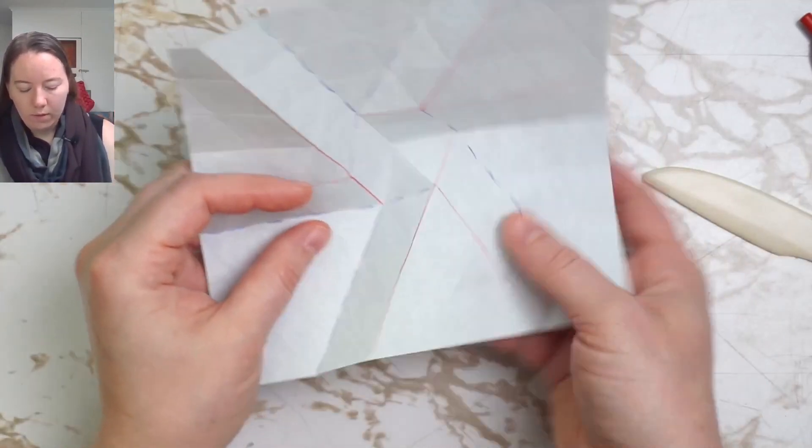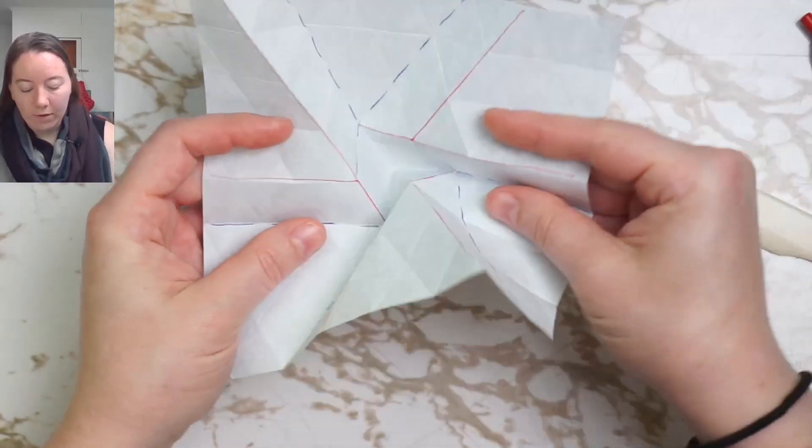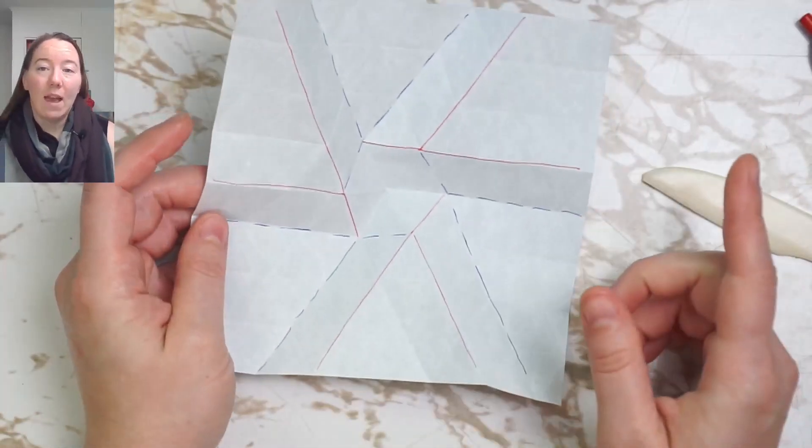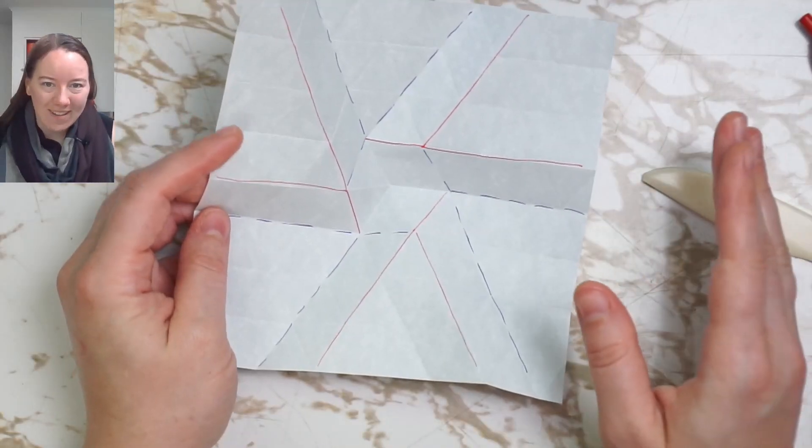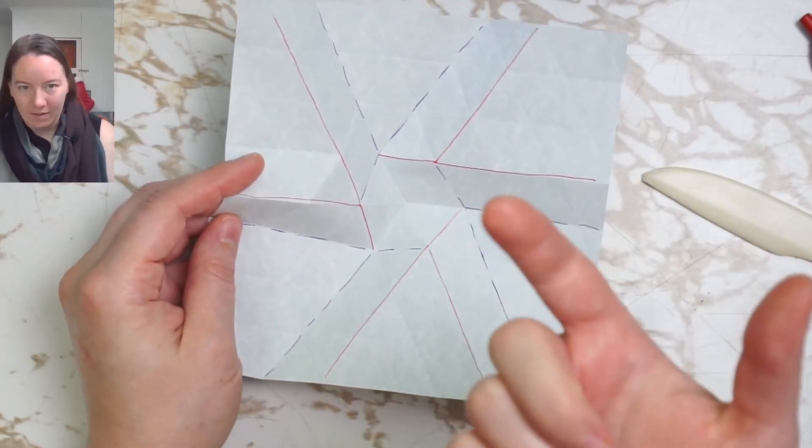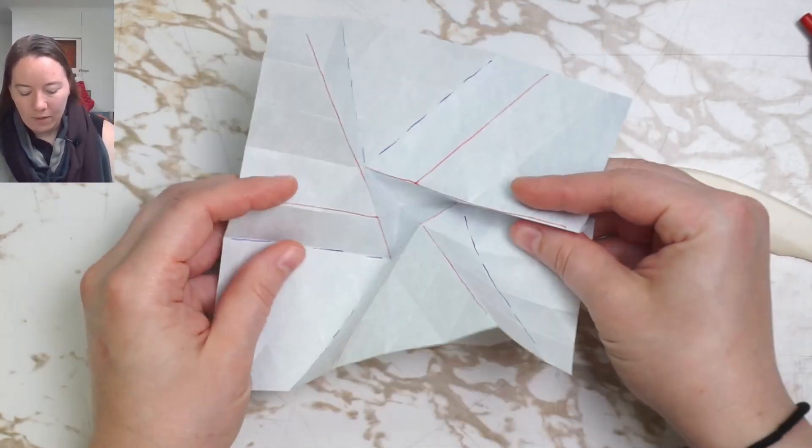So this is key, we want to keep the center down, which is different than how we fold all of the other twists, like all of the normal twists, the center is up. In this one, the center is down.